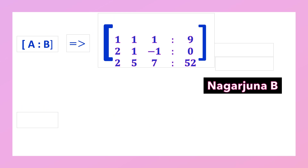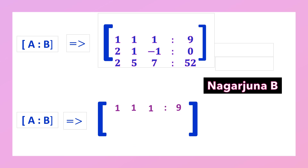Now we apply the first step of Gauss elimination. We use the first element of the first row to make the first elements of the second and third rows equal to zero. The first row remains unaltered. For row 2, since the first element is 2, we apply R2 = R2 minus 2*R1.